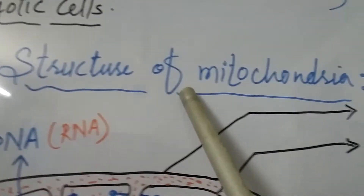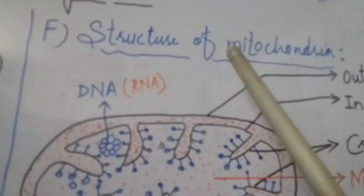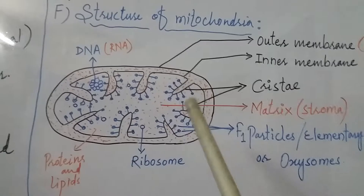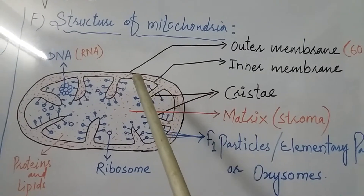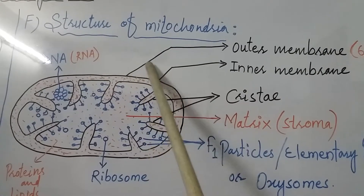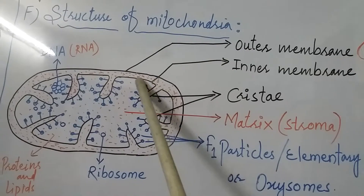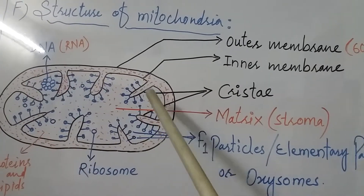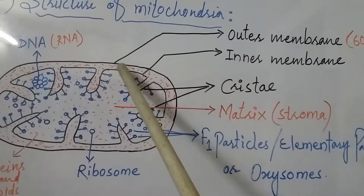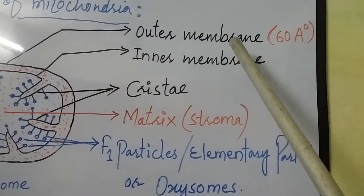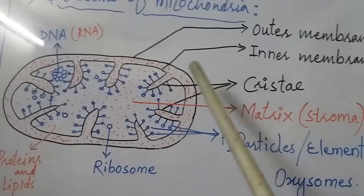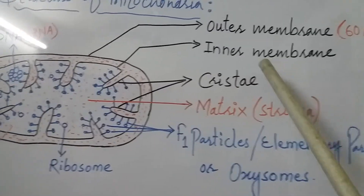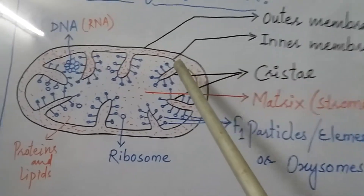Now let's see the ultrastructure of mitochondria. Mitochondria is a double membrane-bound cell organelle — it consists of two membranes: an outer membrane and an inner membrane. The outer membrane has a thickness of about 60 angstroms, is smooth, and is freely permeable, while the inner membrane is not smooth and is selectively permeable.